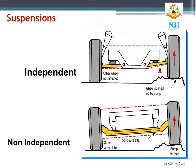Wheel suspensions are broadly classified into independent suspensions and non-independent suspensions. As you can see in the figure, independent suspensions do not affect the other wheel, while in non-independent suspensions, when one wheel moves over a bump it also affects the other wheel. In the non-independent type, the other wheel is also tilted, while in the independent type the other wheel is not affected.